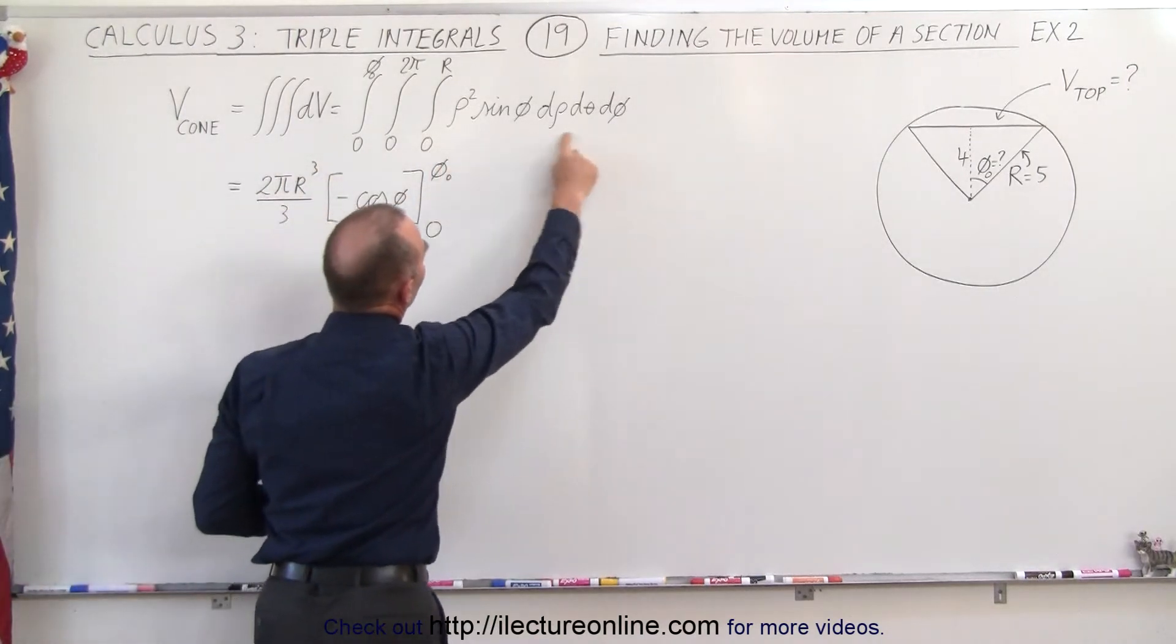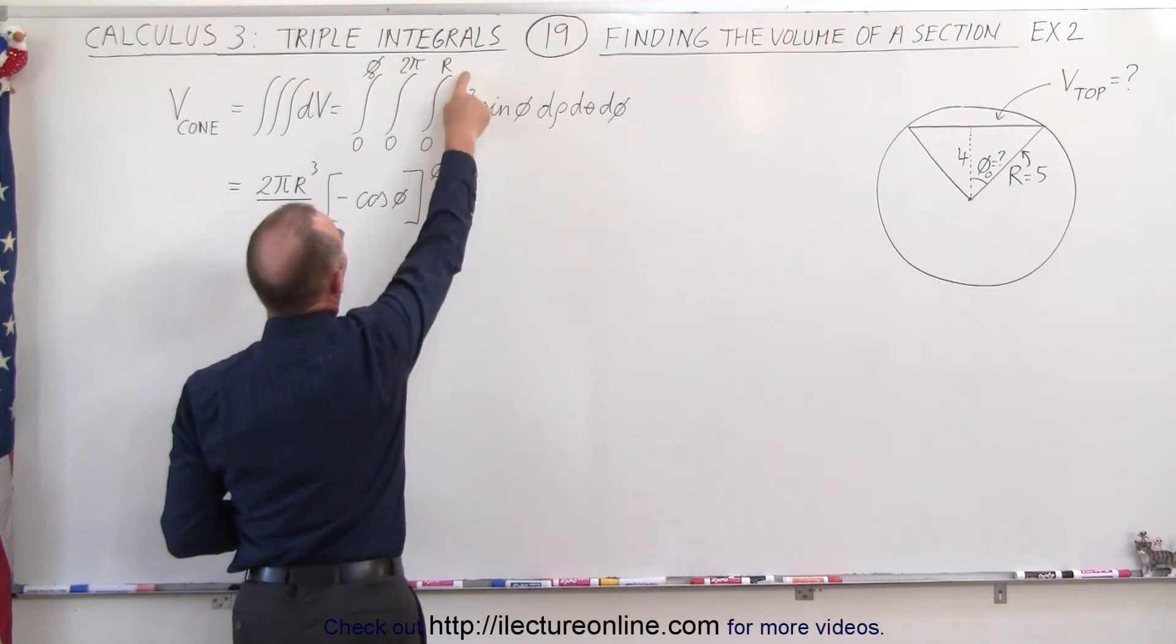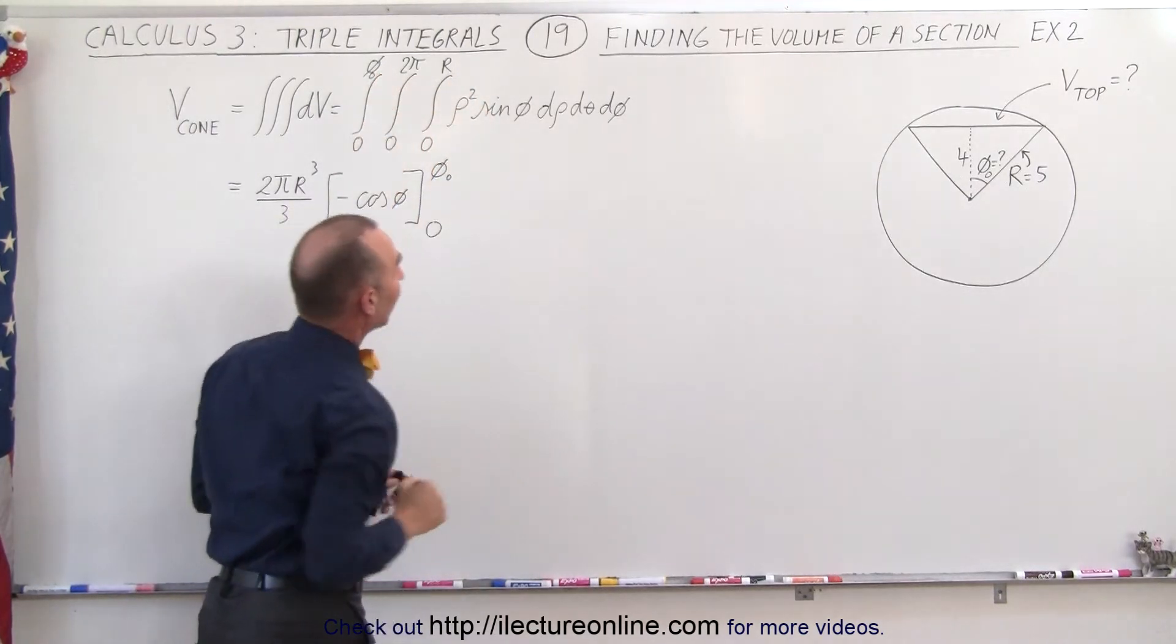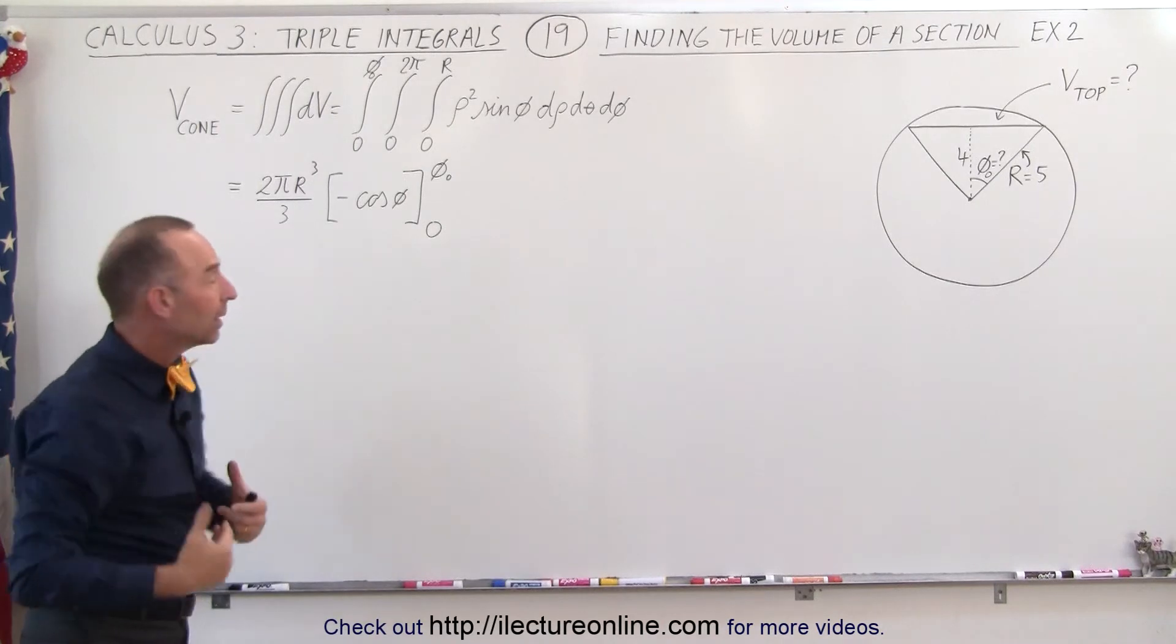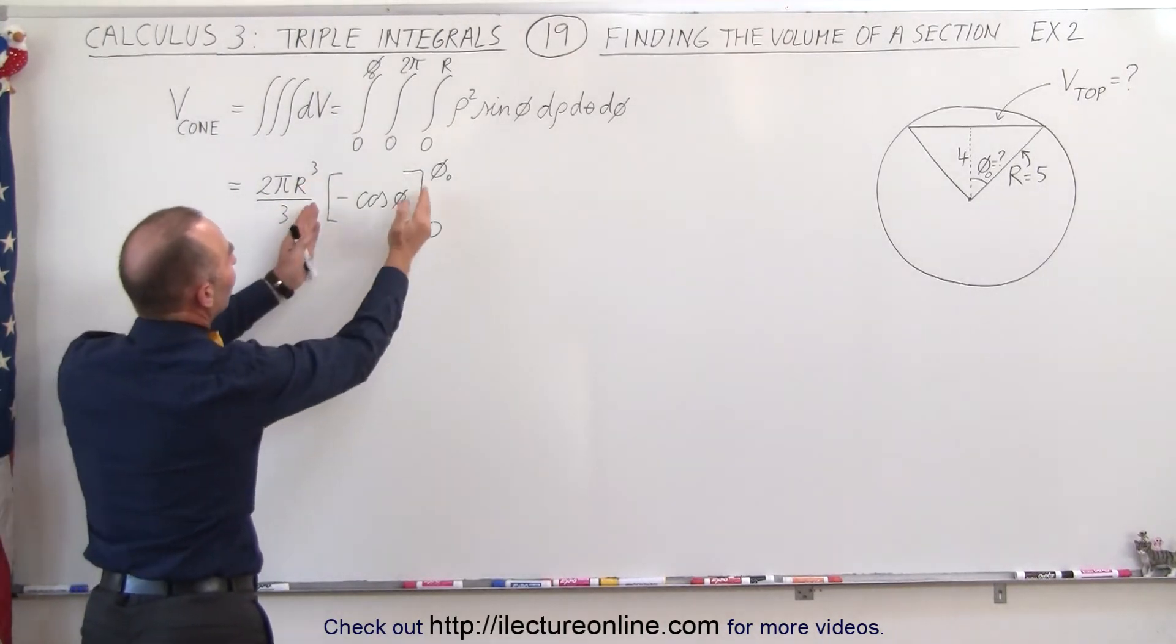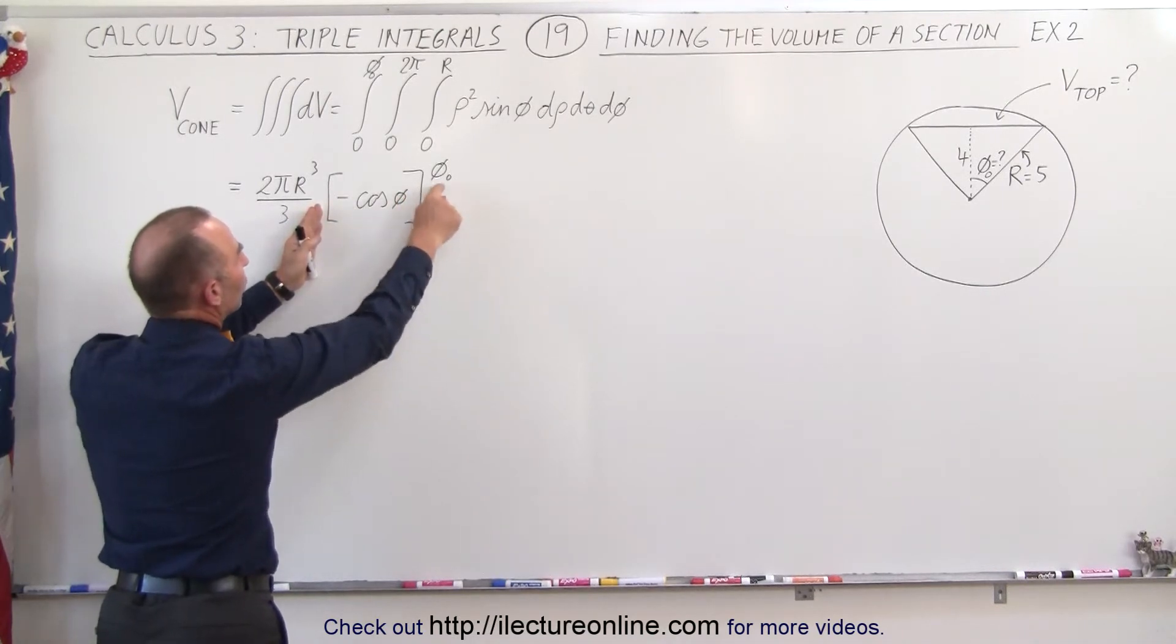The dv would be the volume element in spherical coordinates, and the limits are from 0 to r, from 0 to 2π, and from 0 to that angle, which at this point is not known. And then when we calculate that, we end up with 2πr³/3 times this portion, minus cosine of φ evaluated from 0 to the angle.